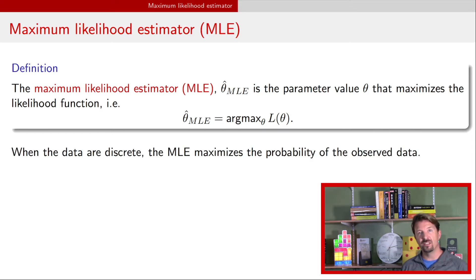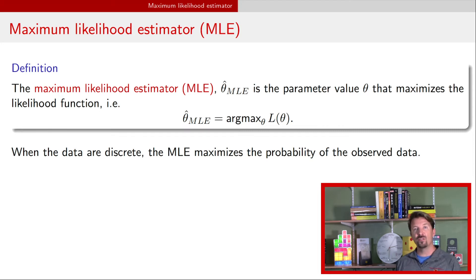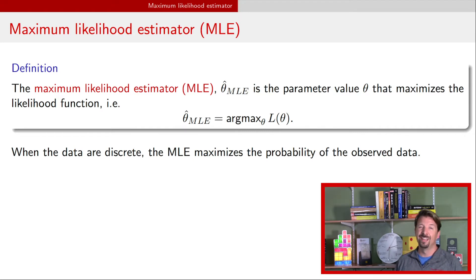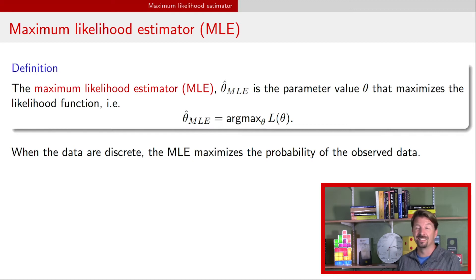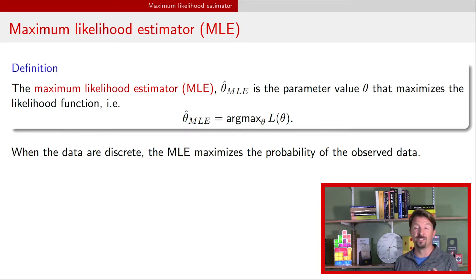When the data are discrete, you can explicitly think about the MLE as the value that maximizes the probability of the data you've observed. If you have continuous random variables, then you actually maximize the density and not the probability, because continuous random variables have a probability of zero of being any particular value.